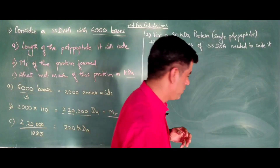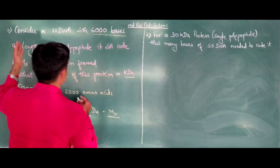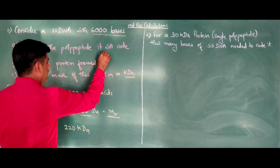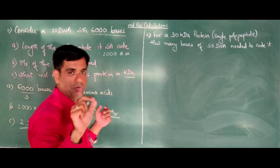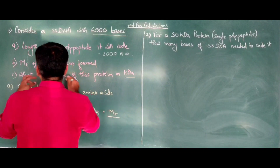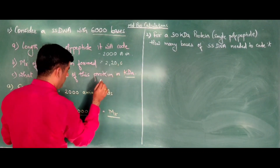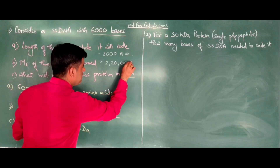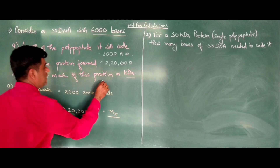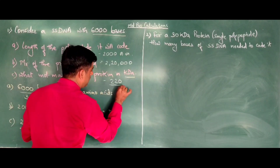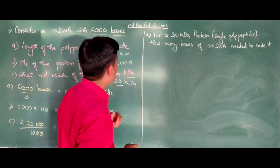So here are the answers: the length of the polypeptide would be 2000 amino acids. The molecular weight of this protein would be 2,20,000 Daltons — correct me if I'm wrong. And the molecular mass of this protein in kilodaltons is 220 kilodaltons. Done with Part 1.